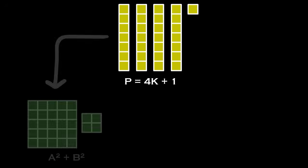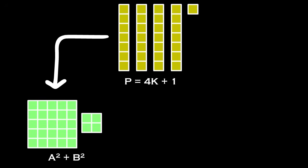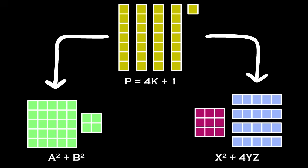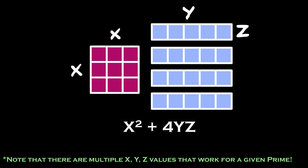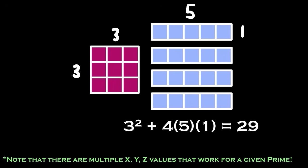Instead of breaking down p into two squares, this new equation allows us to break p into a square with side length x and 4 rectangles with side lengths y and z. For example, if we let x equal 3, y equal 5, and z equal 1, this satisfies x squared plus 4yz equals 29, which looks like the following.